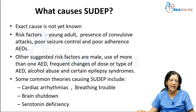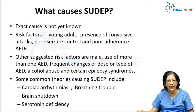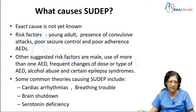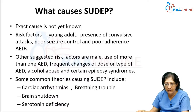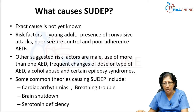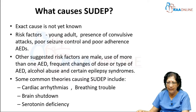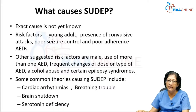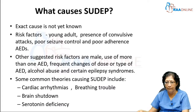Theories that have been postulated include cardiac arrhythmias, breathing trouble, brain shutdown, and serotonin deficiency. Even though research is being done in this area, the exact cause is not very well established. To better understand what happens to the person's body when they die, postmortem is essential.